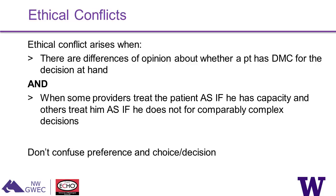In general, ethical conflicts arise in two main situations. First, when there are differences of opinion about whether a patient has capacity for the decision at hand — and there's usually good reason for these differences because things tend to be ambiguous. Second, when some providers treat the patient as if they have capacity while others treat them as if they don't. This often goes unstated, but naming it explicitly allows a real conversation: on what basis am I treating the patient one way or the other?